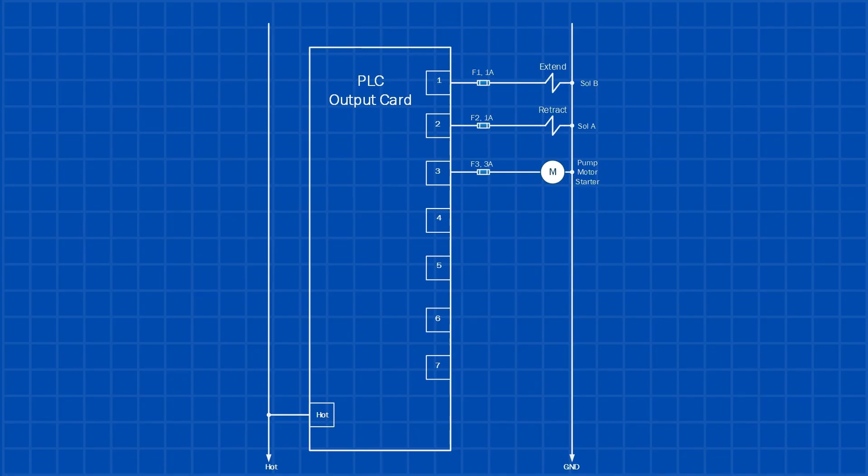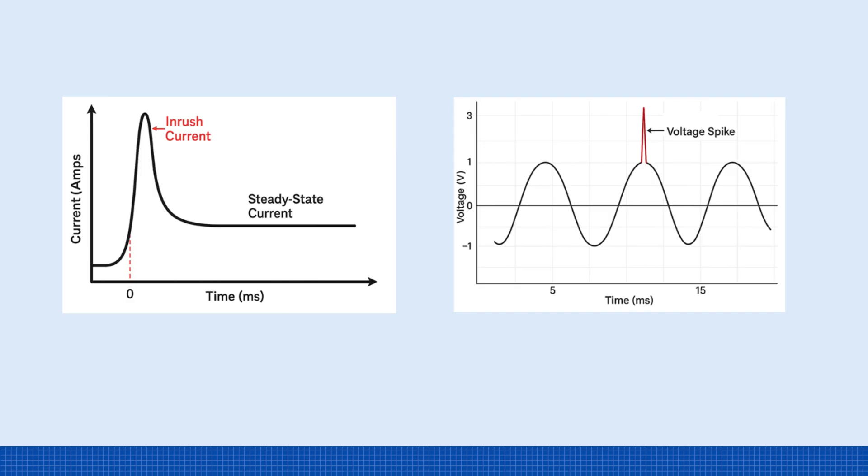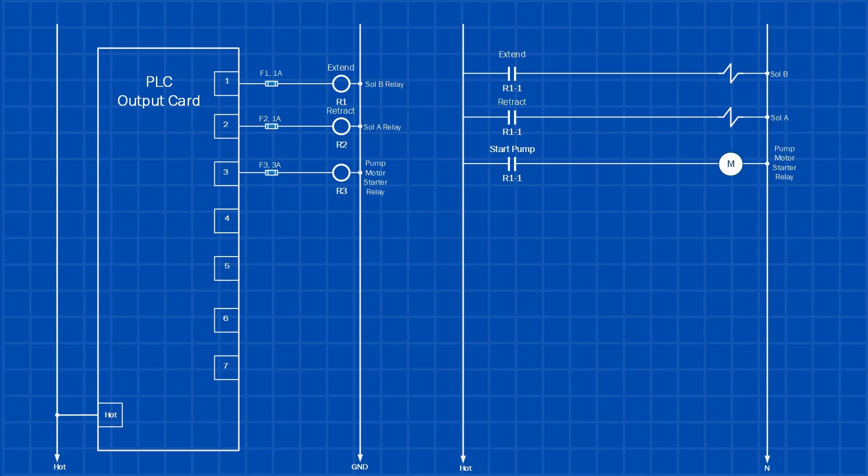There are three main reasons to use a relay. The first one is isolation. Here I'm showing a PLC output directly connected to solenoids and a motor starter, which we'll explain in more detail later. Most PLC output cards use transistors and other electronic components. However, some cards come with built-in relay outputs. In cases where the output card doesn't have relays, directly connecting inductive loads like solenoids or motor starters is not a good practice. That's because inductive loads generate inrush currents and voltage spikes when they turn on or off. These spikes can damage the sensitive components inside the output card. To prevent this, it's good practice to use an external relay with low coil current. The PLC simply energizes the relay coil, and the relay's contacts are used to safely switch to solenoids or motor starter.